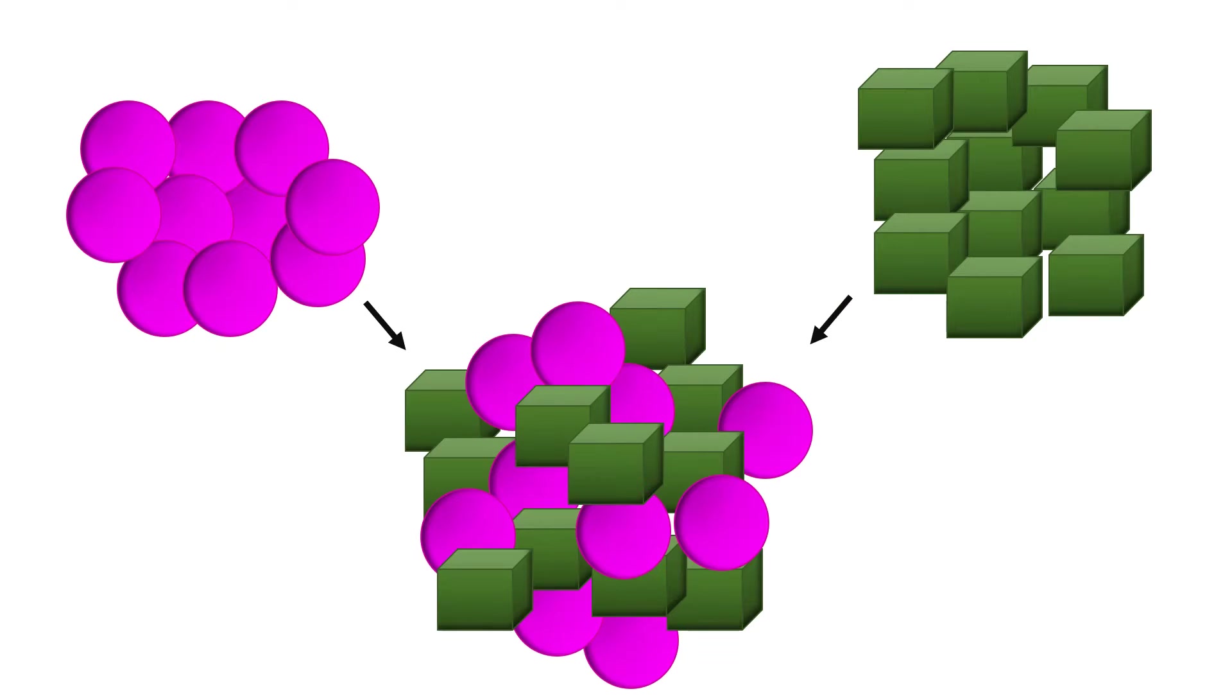We have here purple circles and green squares. Both of these represent how an element looks like. Each circle of the purple element is of the same shape, size, and color. Same thing with the other one. Each square is of the same color and size. This means that an element is made of only one type or kind of atom. Because when one atom is different or when these two elements combine, they will form another substance called a compound.